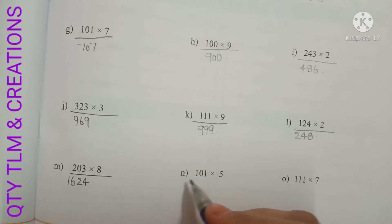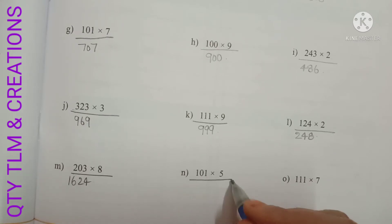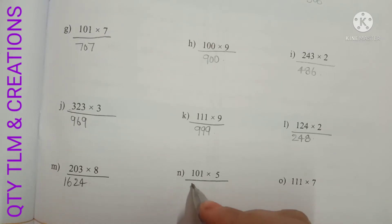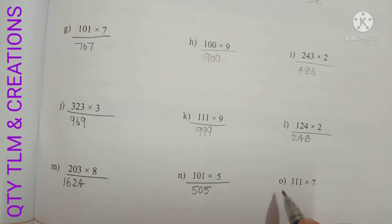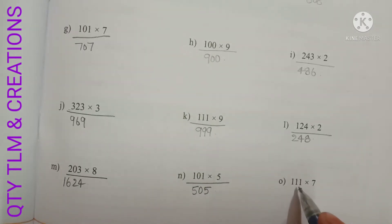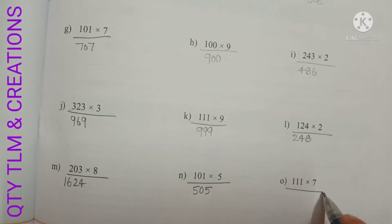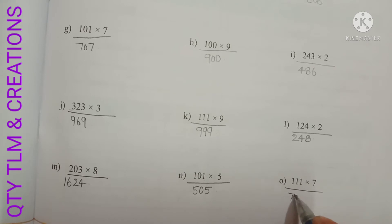Next N: 101 into 5, we will get 505. Next O: 101 into 7, we will get 777.